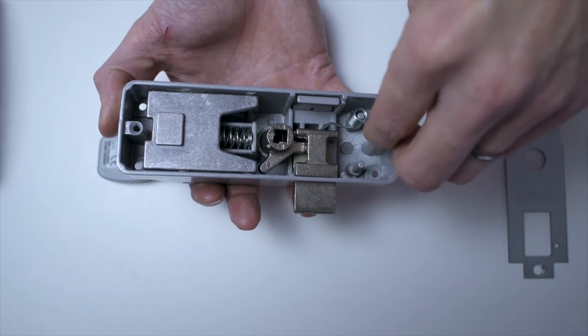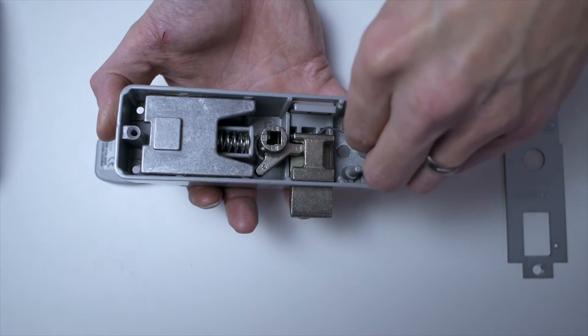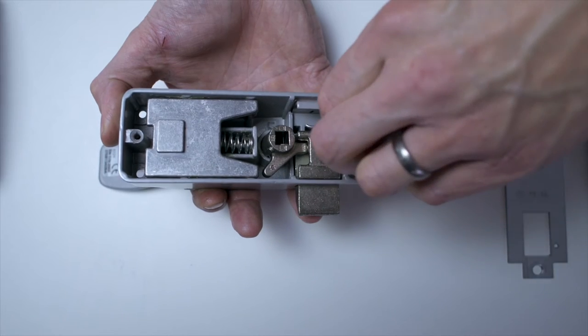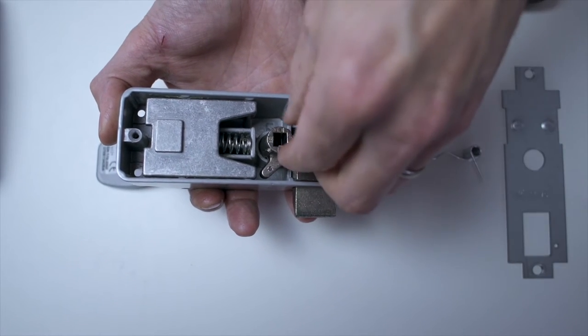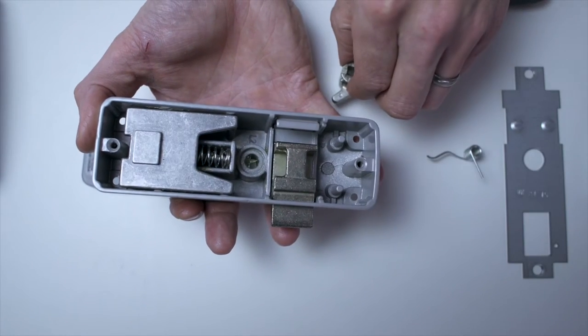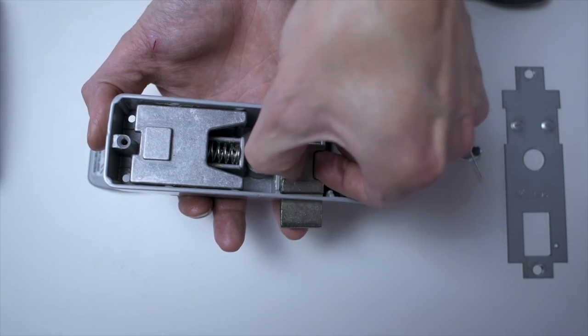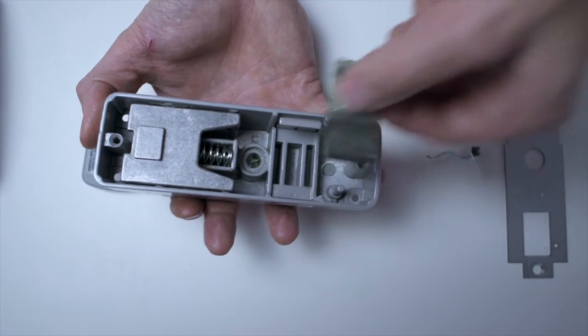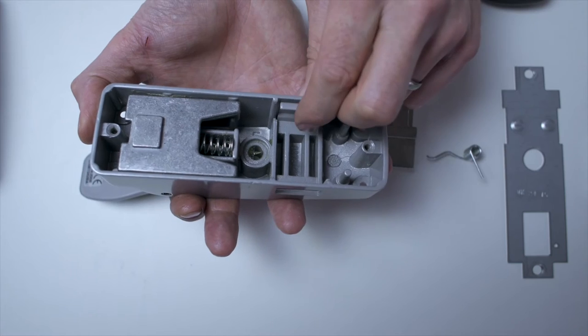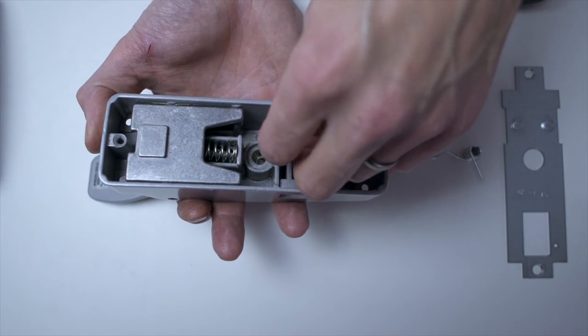We'll remove the spring from the latch bolt, remove the follower, remove our latch bolt, then we have to remove this dummy blanking plate on the opposite side.